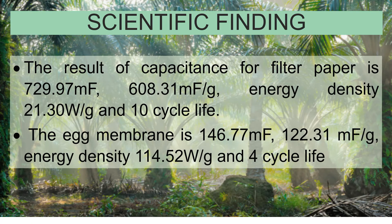The result for filter paper separator shows a capacitance of 729.97 mF and 608.31 mF/g, with an energy density of 21.30 W/g and 10 cycle life. The egg shell membrane separator shows 146.77 mF, 122.37 mF/g, energy density of 114.52 W/g, and 4 cycle life.